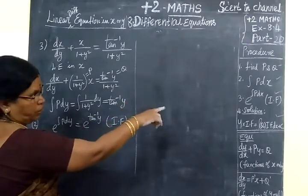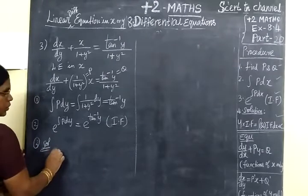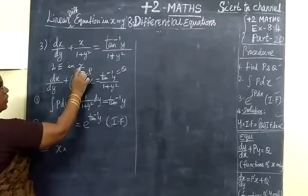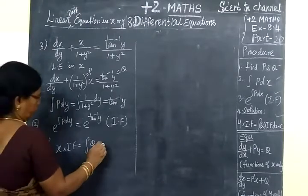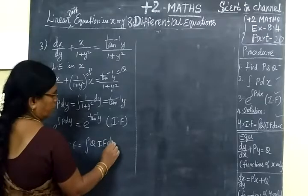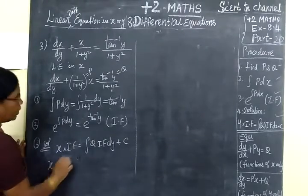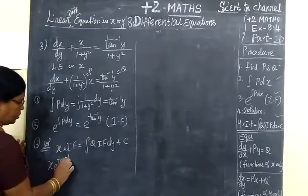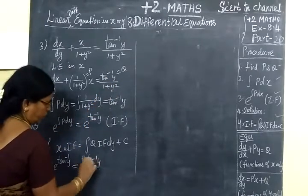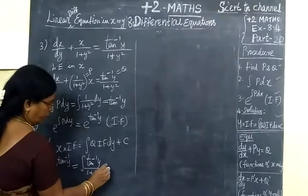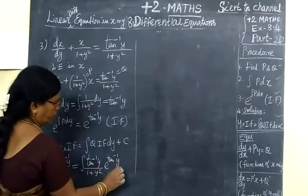The integral period is over. Next step: you are taking the solution. The solution equals x times the integrating factor equal to the integral of Q times the integrating factor. Q is tan⁻¹y divided by (1+y²). So we integrate tan⁻¹y divided by (1+y²) times e to the power of tan⁻¹y, then dy.